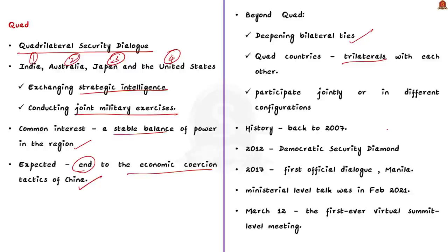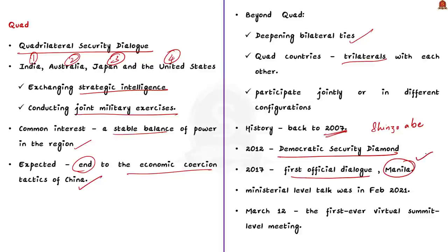Beyond the Quad itself, the four constituents have been deepening their bilateral ties over the last few years. The Quad countries also have trilaterals with each other as well as with other like-minded countries like France, Indonesia and South Korea. They also participate jointly in other platforms with like-minded partners across a range of issues, including tackling COVID-19. The history of Quad can be traced back to 2007 when then-Japanese Prime Minister Shinzo Abe put forth the idea based on the 2004 tsunami collaboration. The idea resurfaced in 2012 under the name Democratic Security Diamond, and the first official dialogue took place in Manila in 2017.